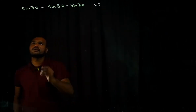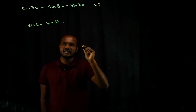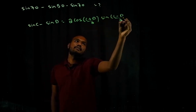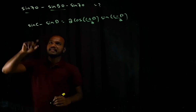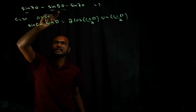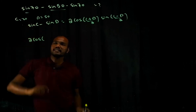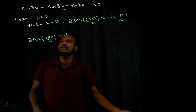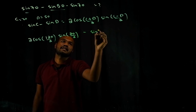For the next question, you need to know the formula: sin C − sin D = 2 cos((C+D)/2) · sin((C−D)/2). Applying to sin 70° − sin 50°, where C = 70° and D = 50°: this equals 2 cos((70+50)/2) · sin((70−50)/2) = 2 cos 60° · sin 10°, multiplied by the remaining sin 70°.